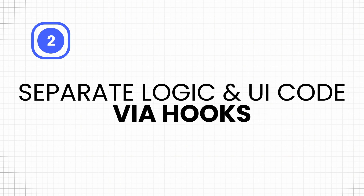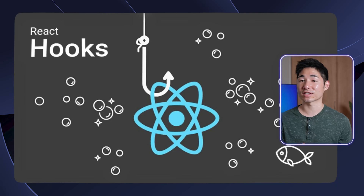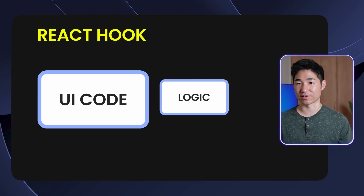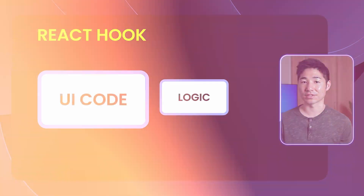Point number two is to separate logic and UI code via hooks. Hooks are a first-class citizen of React and allow components to bring in additional functionality outside of props and JSX. Incorporating state into a component is possible through hooks. But the real power of hooks is that we're able to write our own custom hooks — the perfect way to separate application logic from UI code, and especially relevant for testing, which I'll touch on later.